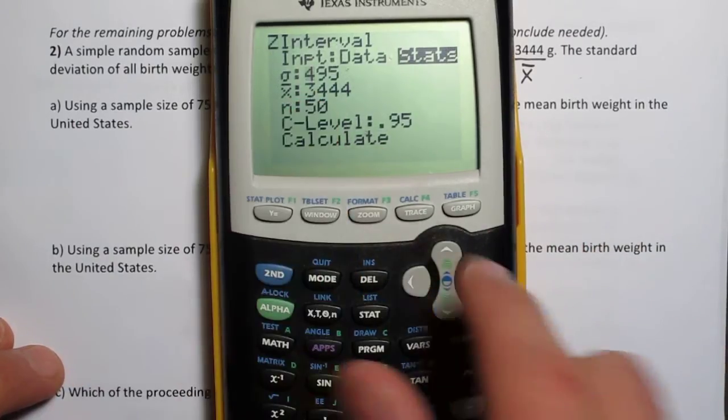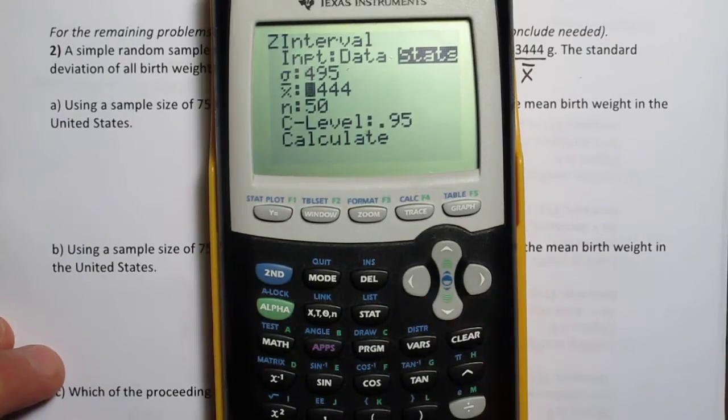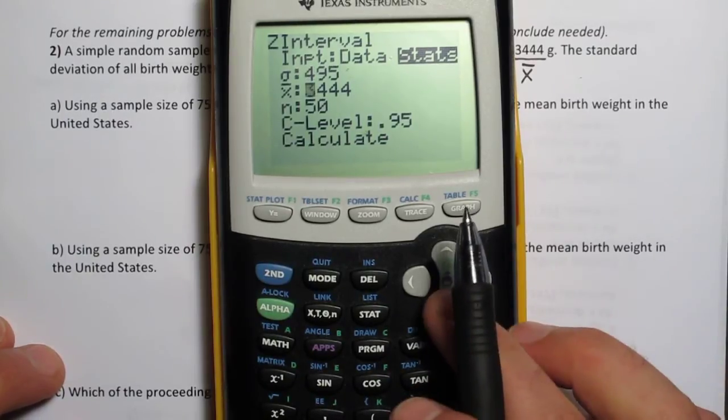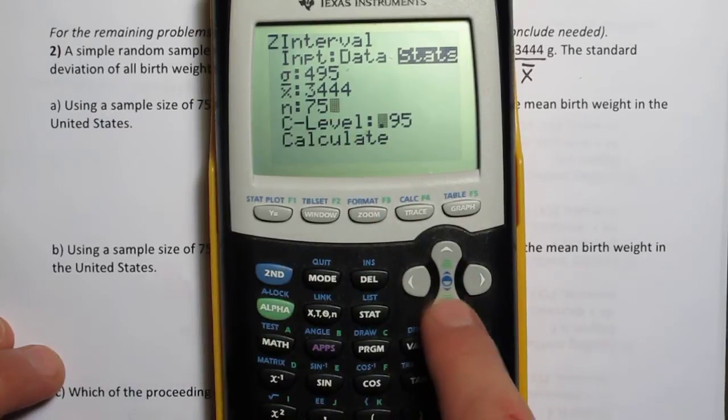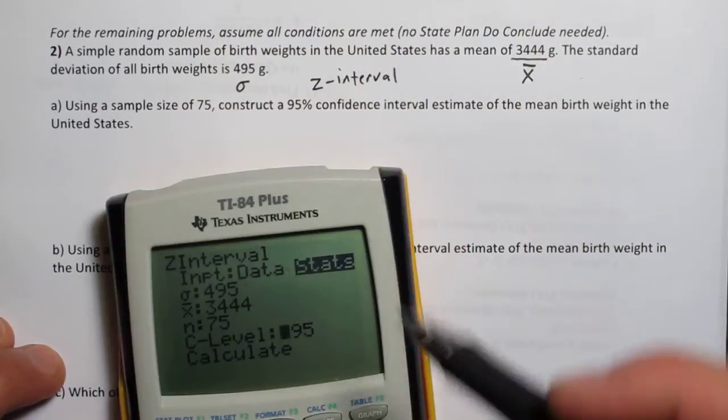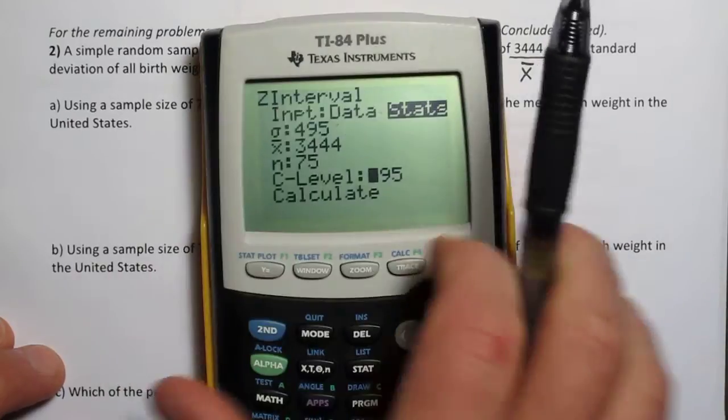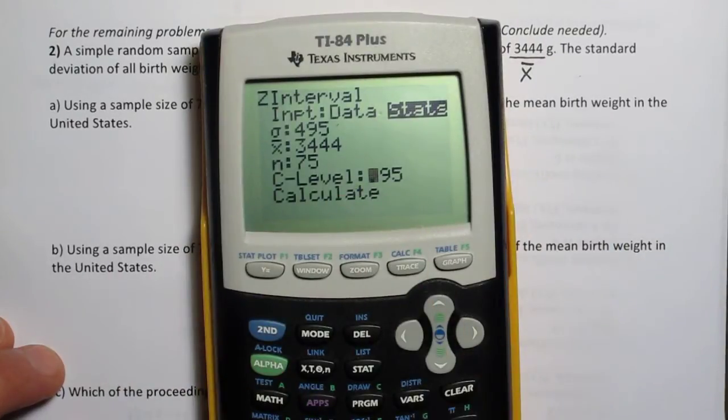And go to stats. Now the population standard deviation is 495. The sample mean is 3444. And we'll put the sample size is 75. And let's see, 95% confidence level. So our C level is 95.